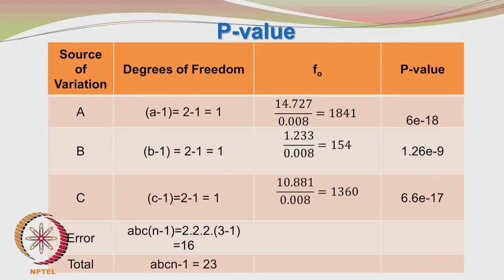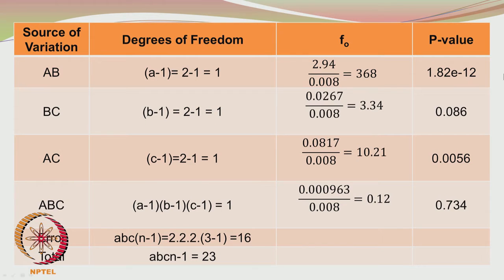Looking at the p-values corresponding to A, B, and C, these values are pretty small, so we can comfortably reject the null hypothesis and state with confidence that A, B, and C effects are significant. For BC, the p-value is 0.086, which is greater than 0.05, so BC is an insignificant interaction. For ABC, the p-value is 0.734, which is quite large, so we accept the null hypothesis that the ABC interaction is insignificant. This matches our earlier conclusion from the F-value comparison where BC (3.34) and ABC (0.12) were both smaller than the critical value of 4.49.